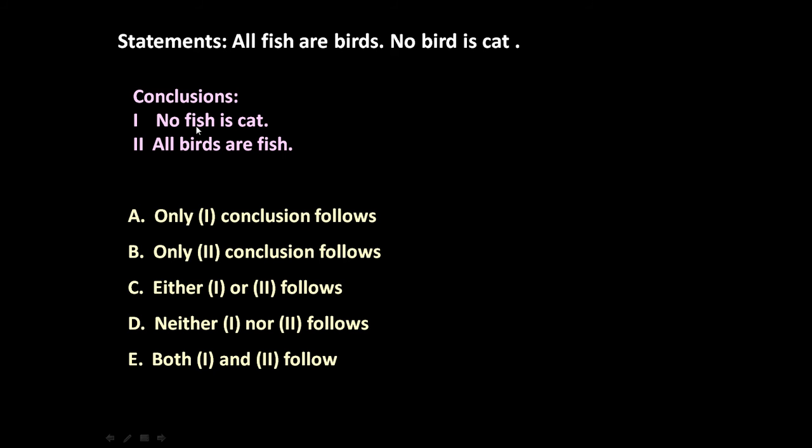Two conclusions are being drawn: no fish is cat, all birds are fish. So first let us convert these two statements into Venn diagram.